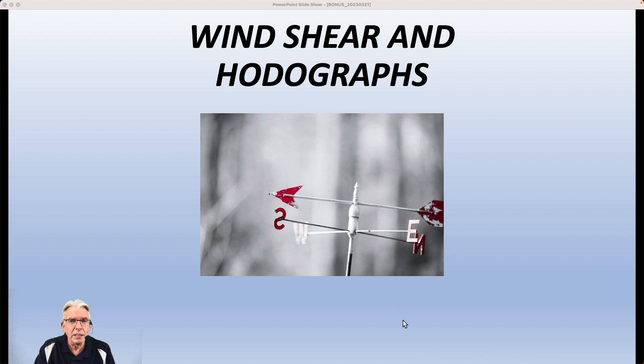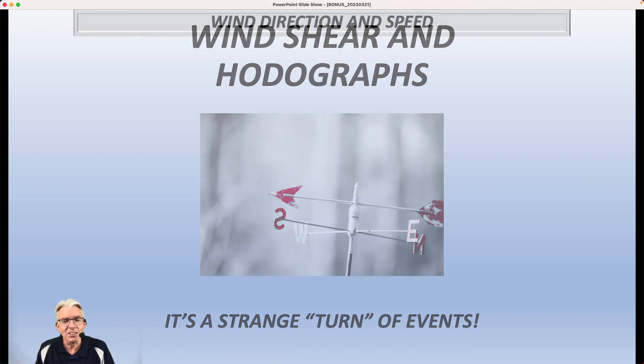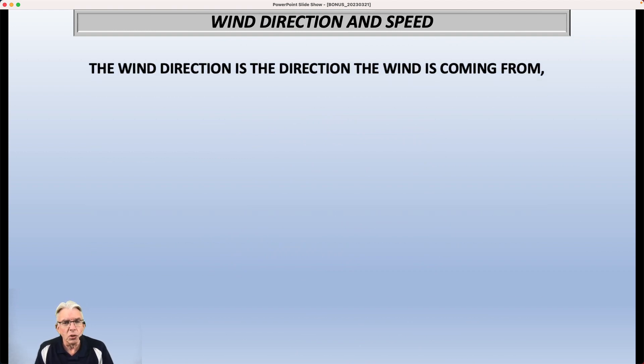One way to look at it is by using a tool called a hodograph, which gives us an idea of how the winds are changing with height. So wind direction and wind speed - this is probably review for most, if not all of you. But the wind direction is the direction the wind is coming from, not the direction it is blowing toward. So a southwest wind is coming from the southwest blowing toward the northeast. A west wind is coming from the west blowing toward the east. A north wind is coming from the north and blowing toward the south.